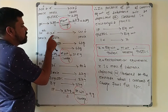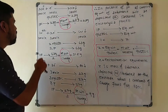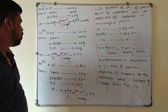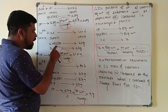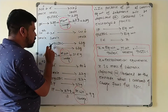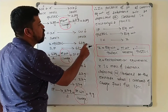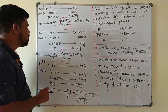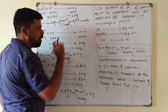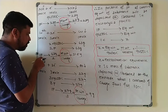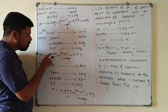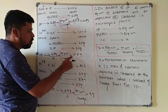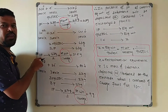For copper: each Cu²⁺ ion gains 2 electrons, so each one mole of Cu²⁺ gains 2 moles of electrons, depositing one mole of copper. The charge on 2 moles of electrons is 2 × 96,500 coulombs. So 2 Faradays deposit 63 grams of copper (atomic mass). Therefore, one Faraday deposits 63 / 2 = 31.5 grams of copper, which is the equivalent weight of copper (molecular weight / charge = 63 / 2).